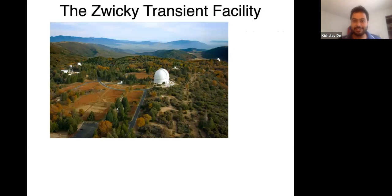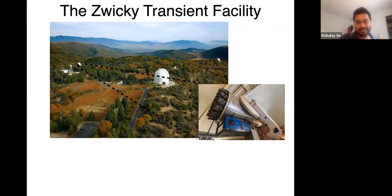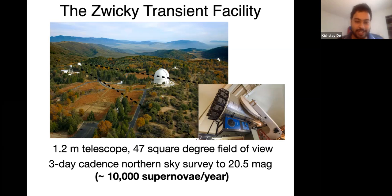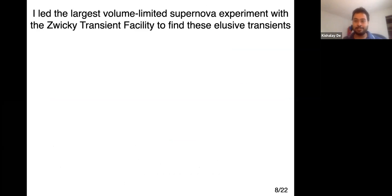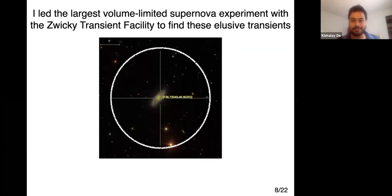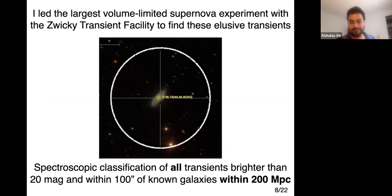The idea is simple: we take a catalog of nearby galaxies from SDSS and ask whether a transient falls within a 100 arcsecond radius of a known galaxy. If it is, we take a spectrum and classify it — for every single supernova found in ZTF. This builds up a volume-limited sample of supernovae within the local universe. For bright transients brighter than 19 magnitude, our main machine is the SED machine spectrograph on the 60-inch telescope at Palomar. For fainter things we use the 200-inch telescope at Palomar or the Keck telescopes.